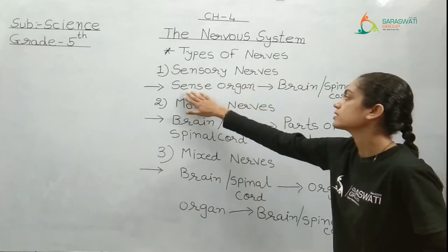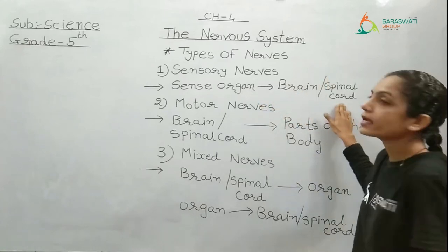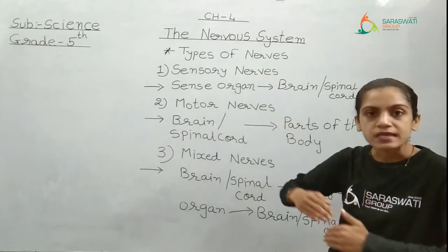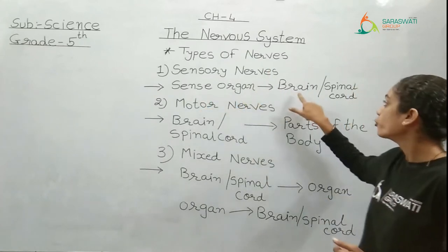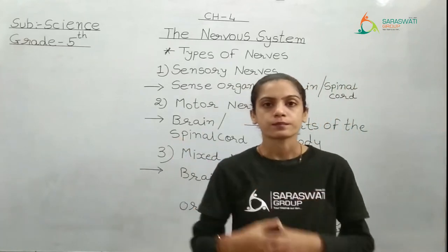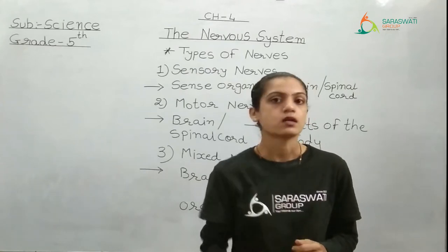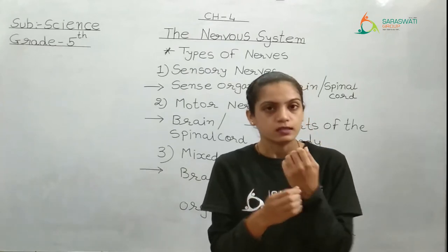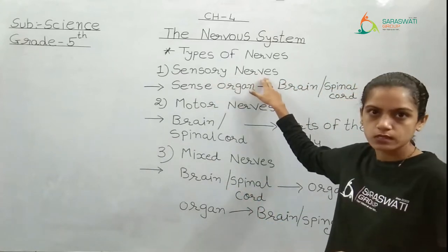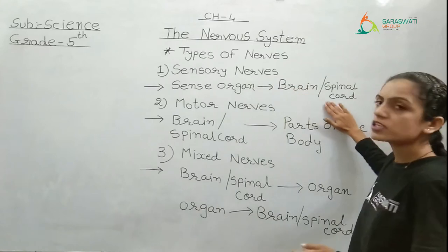The messages passed from sensory organs to the brain or spinal cord travel through sensory nerves. You can see I have written: sense organ → brain/spinal cord. That means these nerves are passing the message from sense organ to brain or spinal cord. What you see, what you hear, what you smell, what you taste or feel — all these messages will be passed by sensory nerves.